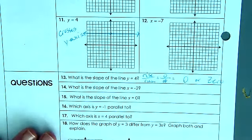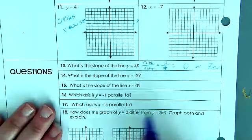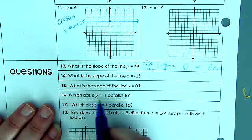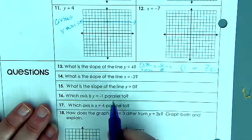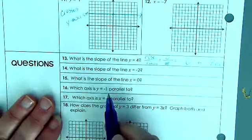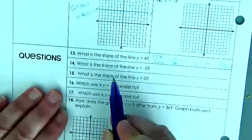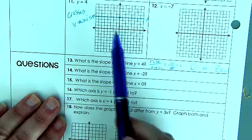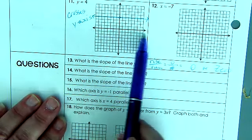Next number, jumping down. We're going to talk about number 16: which axis is y equals negative 1 parallel to? Well, even if I think about this as y equals 4, because negative 1 is going to actually be right here.